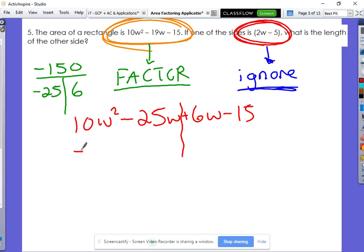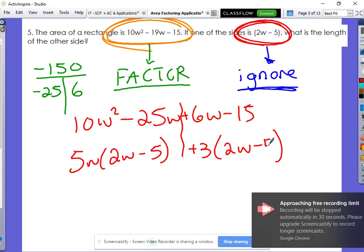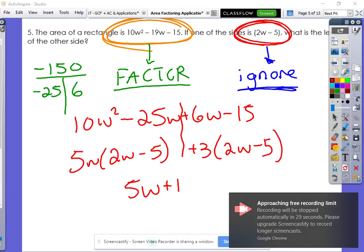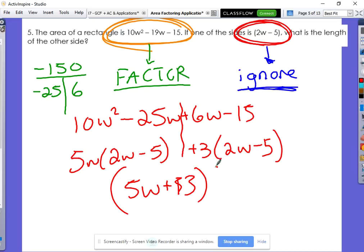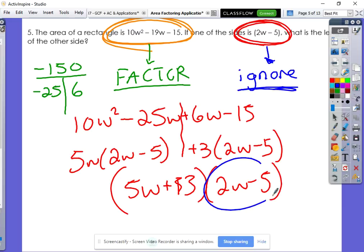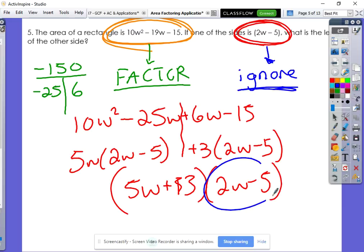All right, writing this out here, and now I look for my GCFs. That would be a 5w. We're left with 2w minus 5. Here, that would be a positive 3. We're left with 2w minus 5. So now we have 5w plus 3 and 2w minus 5. So you can see that 2w minus 5 is this guy right here. That's why I told you to ignore it for a minute. He was coming up. This is your answer right here. There's your answer. 5w plus 3 is the missing side that we were looking at.